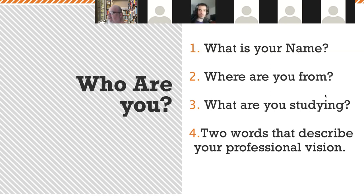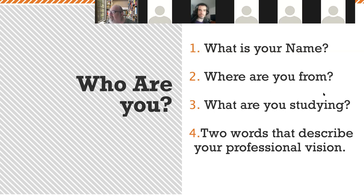Jacob Rourke: I'm from Washington but I'm actually taking this class in Virginia right now. I'm studying game development and two words to describe my professional vision would be originality and trippy. Johnny Torres: I'm originally from Puerto Rico but currently residing in Orlando, Florida. I'm studying information technology and two words are ambitious and resilient.